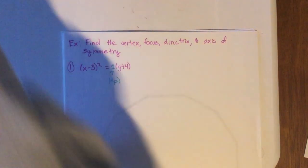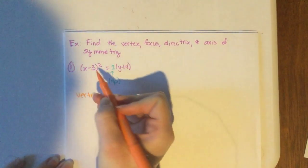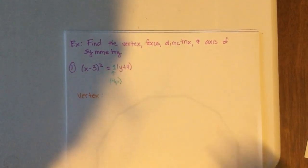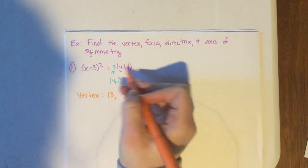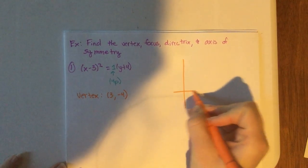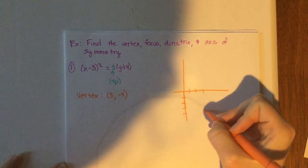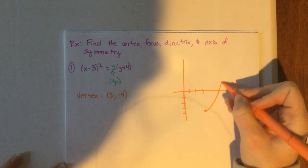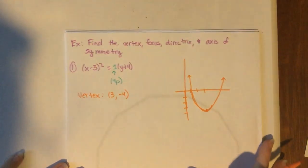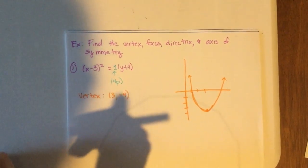Our first step is to find the vertex. Remember: x goes with the x part of the vertex, y goes with the y part. I have x minus 3, so that's a positive 3. I have y plus 4, so that's a negative 4. Going right 3 and down 4, the parabola opens upward. Remember: x squared means up or down; y squared means left or right.